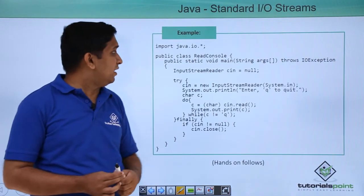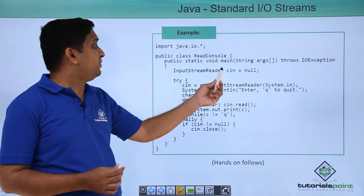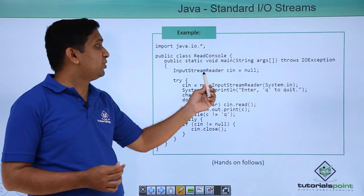Here a program is written where there is an InputStreamReader object initialized with System.in, which is the standard input stream. A few characters are taken from the user by reading using c.read and printing the same characters. Because the input stream is defined using System.in, this read method takes input from the keyboard, printing whatever we enter unless we hit the 'q' character.